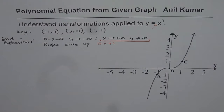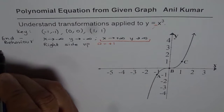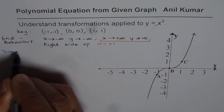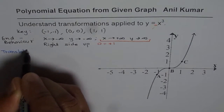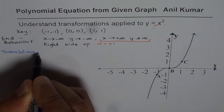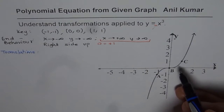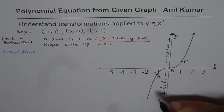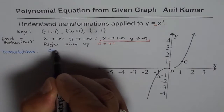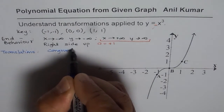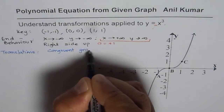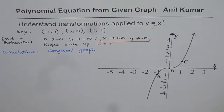Now let us consider different types of transformations one by one. First, let me show you what happens with translations. Whenever translations are involved, the shape remains exactly the same — we get congruent graphs. But the graph is displaced depending on the translation.